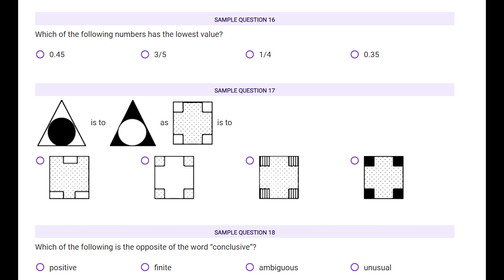Sample question eighteen: which of the following is the opposite of the word 'conclusive'? Conclusive means definitive — something that is certain. The only word that is opposite to conclusive is 'ambiguous,' because that is non-certain and non-definitive. So C, ambiguous, is the answer.